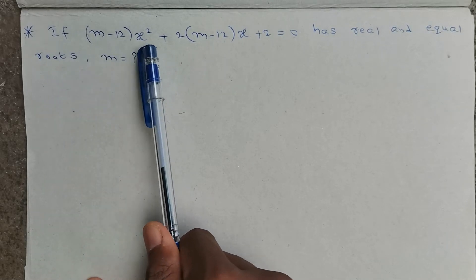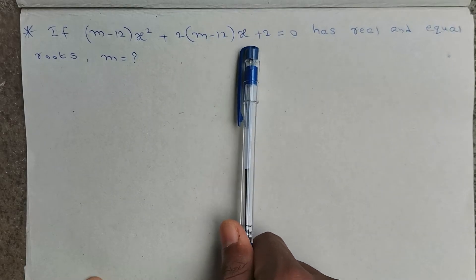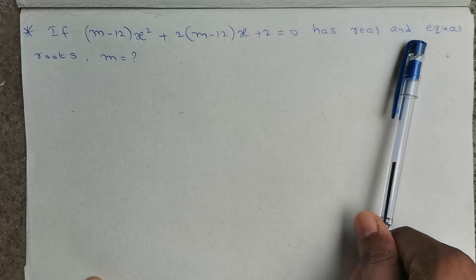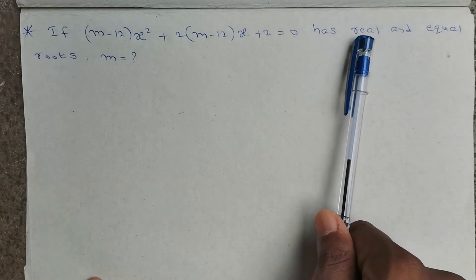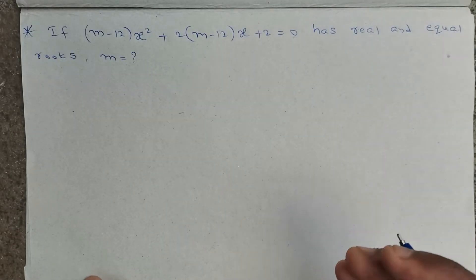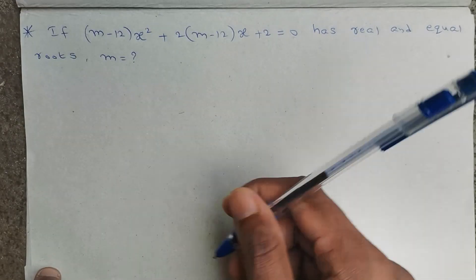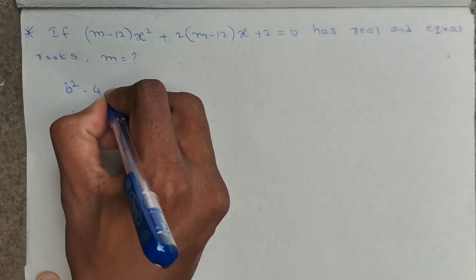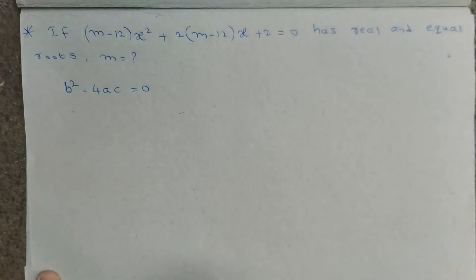If (m minus 12) x² plus 2(m minus 12)x plus 2 equals 0 has real and equal roots, then find the value of m. Since the equation has real and equal roots, the nature of the roots is given. When roots are real and equal, b² minus 4ac equals 0.